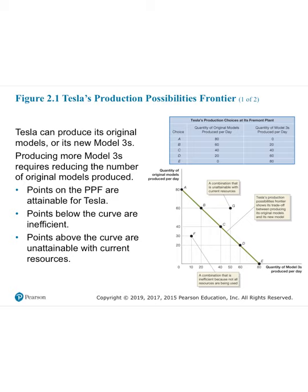Choices B, C, and D are different combinations. In choice B, they devote most resources to producing 60 original models, leaving enough to produce 20 Model 3s. Choice C is split evenly. And in choice D, they produce some original models but mainly Model 3s. The graph below is the production possibility frontier illustrating these different combinations.